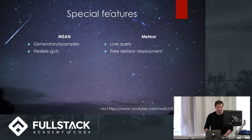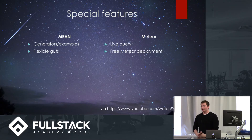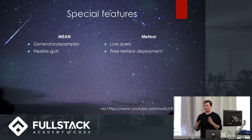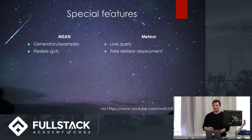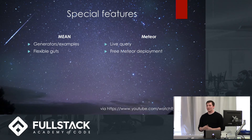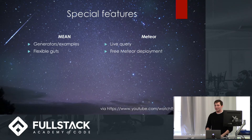Looking at unique features: MEAN has generators, like Yeoman's generator, which make it easy to get a file structure and good boilerplate, and it has flexible customizability. With Meteor, you get something called live query, which enables instantaneous syncing between your app's client and backend. Another nice thing about Meteor is its deployment process, which is unbelievably painless — I'll walk through that in a minute.